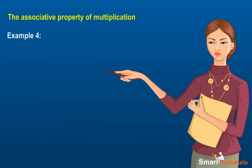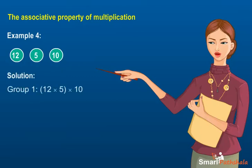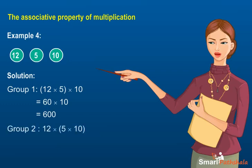Example 4: Explain the associative property of multiplication for the whole numbers 12, 5, and 10. Group 1: (12 × 5) × 10 = 60 × 10 = 600. Group 2: 12 × (5 × 10) = 12 × 50 = 600.